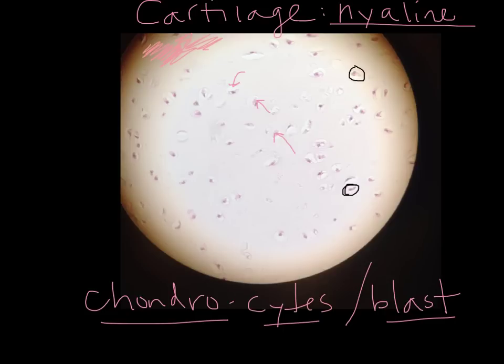This slide was taken from the trachea. A lot of you may have had a difficult time finding it because there are a lot of other tissues in that sample. Your trachea is composed of cartilaginous rings, and so what we were trying to do is find the ring, which is indeed the cartilage. But it's also surrounded by a number of other tissues.